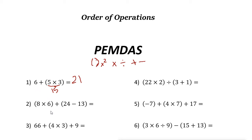Take a look at this next one — we have two parentheses. The first parentheses: eight times six is forty-eight. Then the next parentheses: twenty-four minus thirteen is eleven. Now add these two results: forty-eight plus eleven gives you fifty-nine. The answer is fifty-nine.